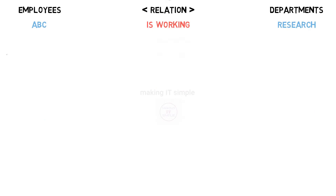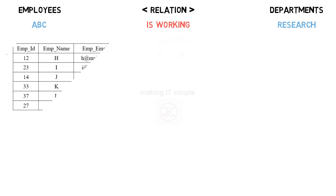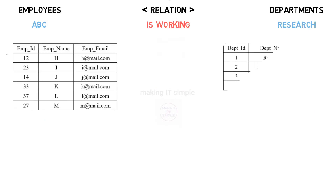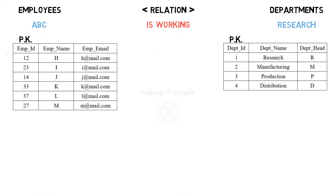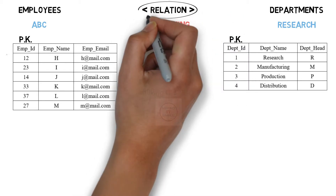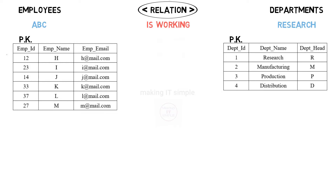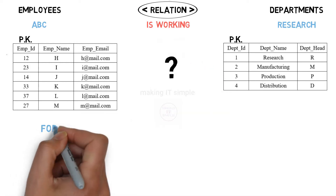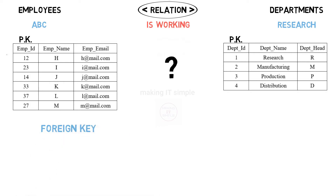Similarly, in the database there will be two individual tables: employee table and department table. Now each table has a single primary key which is used to uniquely identify individual tuples or records in that table. Now the relation that we discussed between the employee and department — how will we define this relation in the database? This is where foreign key helps.